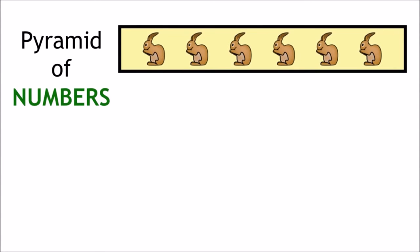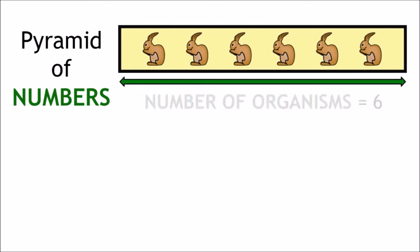So, for an ecological pyramid of numbers, the width of the bar shows the number of organisms at that step in the food chain. The unit for this is number of organisms.